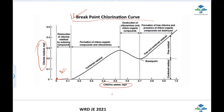We know that the formation of chloro-organic compounds and chloramines is produced, and we get a combined residual. The graph is not at 45 degrees, but less than 45 degrees. This is the graph of the combined residual at less than 45 degrees.